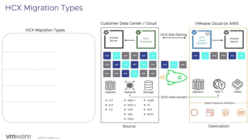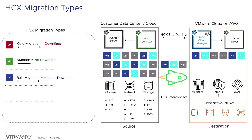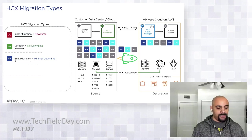The migration types HCX offers are as follows. Cold migration uses NFC — HCX picks it up by default as long as the VM is powered off; you won't see it in the UI until the VM is powered off. vMotion is baked into HCX — serialized live migration with no downtime. Bulk migration is only available within HCX and offers minimal downtime: we deploy new VMs on the destination side, replicate the data across, then do a minimal cutover by shutting down the source and bringing up the destination. The source VM is kept shut off as a back-out plan.